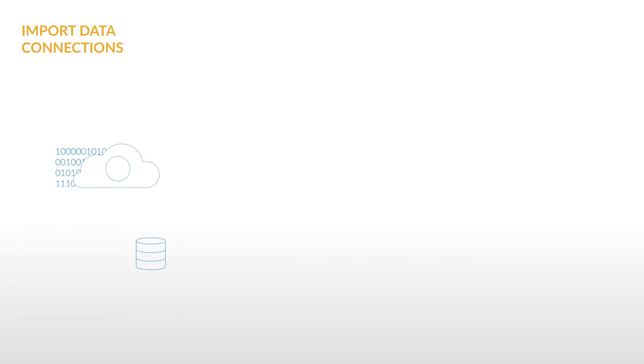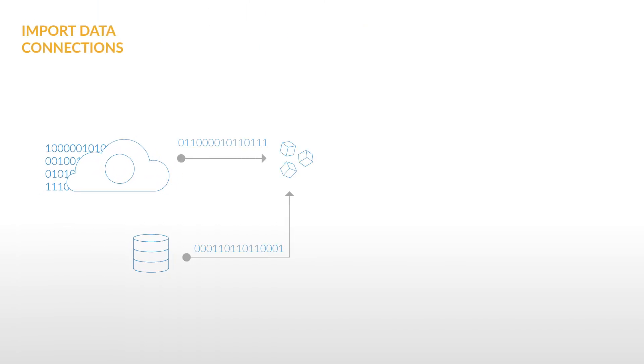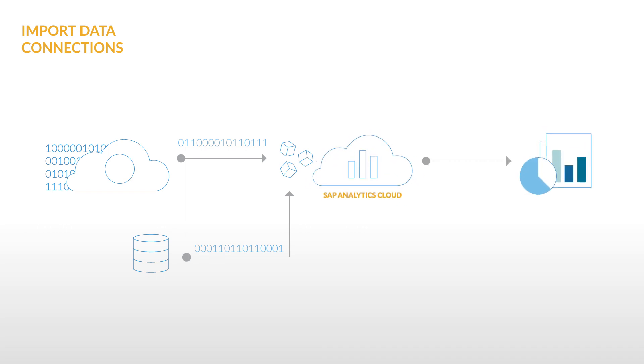An import data connection, on the other hand, acquires data from the source system and then copies it to Analytics Cloud. This means that changes made to the data in the source system will not be reflected in Analytics Cloud until it's updated. These updates can be scheduled on a recurring cycle or can be done manually. By importing your data to the application, you'll be able to leverage analytics capabilities that may not be available in your source system. Import data connections are ideal when you need to prepare your data or blend data from more than one source.